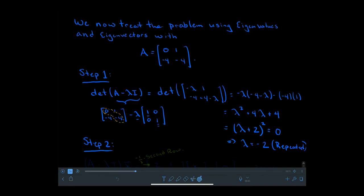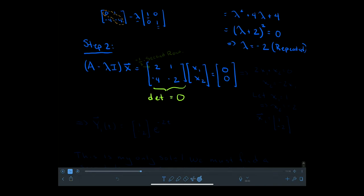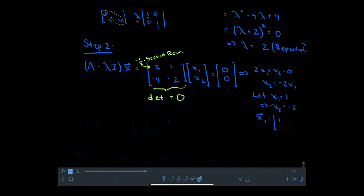For step two, I look at (A - λI)X = 0 with λ = -2, giving the matrix [2, 1; -4, -2]. The determinant is zero — both rows are multiples of each other — so I use the first row: 2X₁ + X₂ = 0, meaning X₂ = -2X₁. Letting X₁ = 1 gives X₂ = -2, so the eigenvector is [1, -2]. Since this root is repeated, I cannot find a second eigenvector from this.